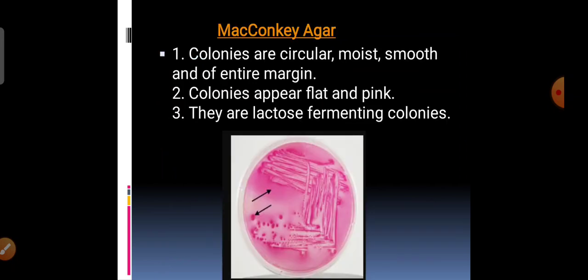First, we can use MacConkey's agar. Inoculate the organism on MacConkey's agar. MacConkey's agar is a differential media — it is a differential and selective media — which helps you differentiate between lactose fermenting and lactose non-fermenting organisms. If you are confused whether it is E. coli or Salmonella, inoculate the organism on MacConkey's agar. If you get pink colored colonies, the organism is lactose fermenting — it cannot be Salmonella, because Salmonella is a lactose non-fermenting organism.